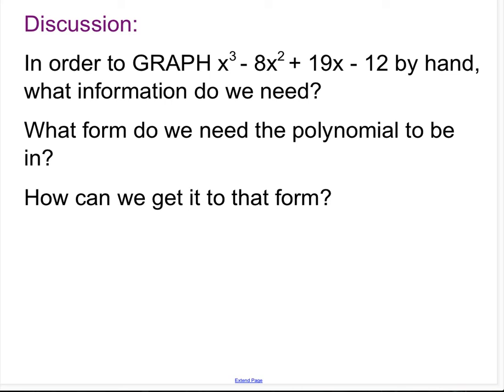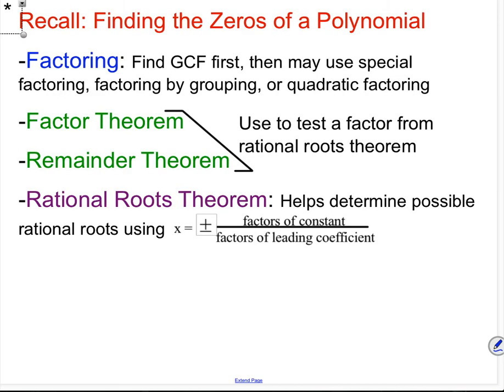If we're given standard form, we need to get it into factored form. The ways we can do that are testing roots from the rational root theorem, or graphing it to find a first point and then using synthetic division to get it down to a quadratic so we can factor it. This slide has the ways you can find the zeros of a polynomial.